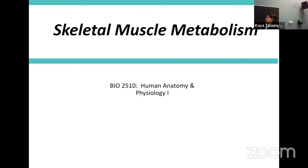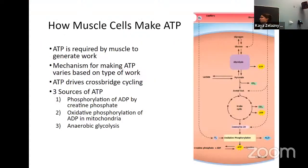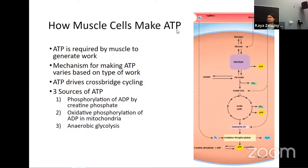We are going to finish up skeletal muscle stuff before we move into the heart. So we're going to be doing skeletal muscle metabolism today — talking about how muscle cells are getting the ATP they need in order to contract, in order to move your body. We did talk about metabolism a long time ago. We're not going to redo all of this in detail, but we do want to remember a little bit about how we get energy.